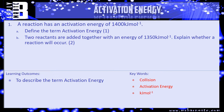I've got an example question for you: a reaction has an activation energy of 1,400 kilojoules per mole. Define the term activation energy for one mark. Then, two reactants are added together with an energy of 1,350 kilojoules per mole — explain whether a reaction will occur. You'll get one mark for saying whether it will or not, and one mark for saying why, in terms of the activation energy and collisions.